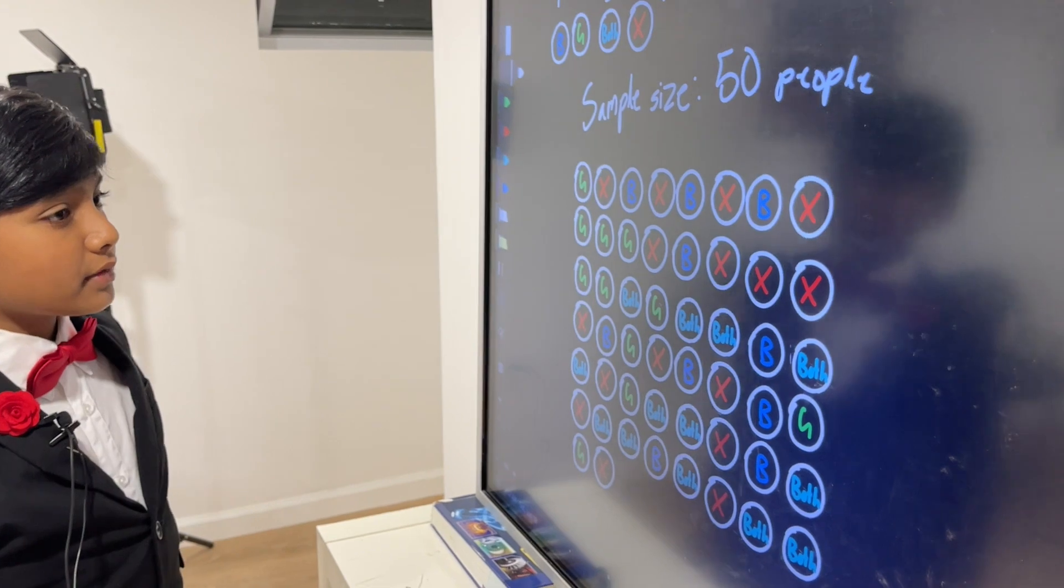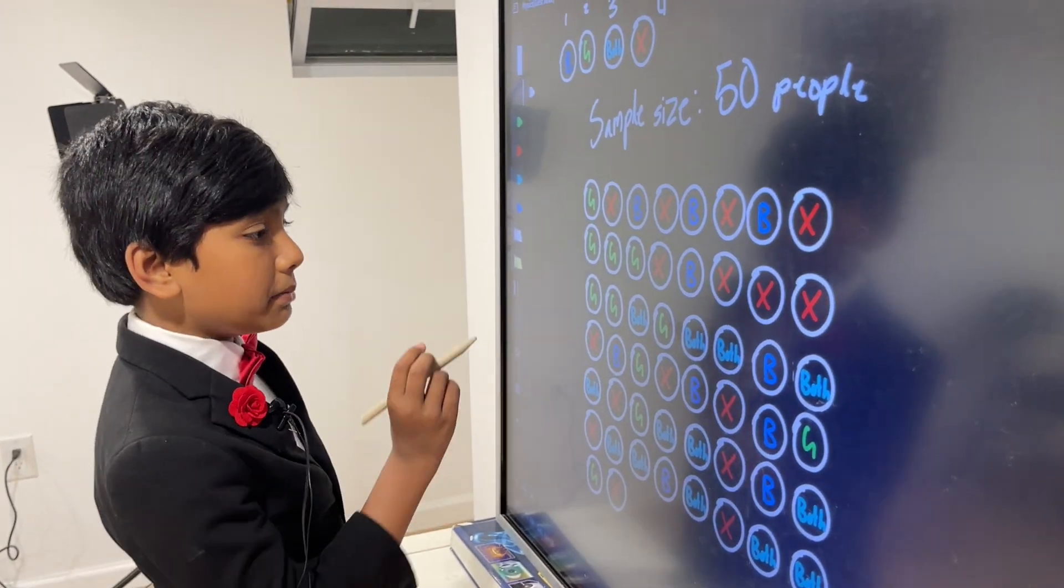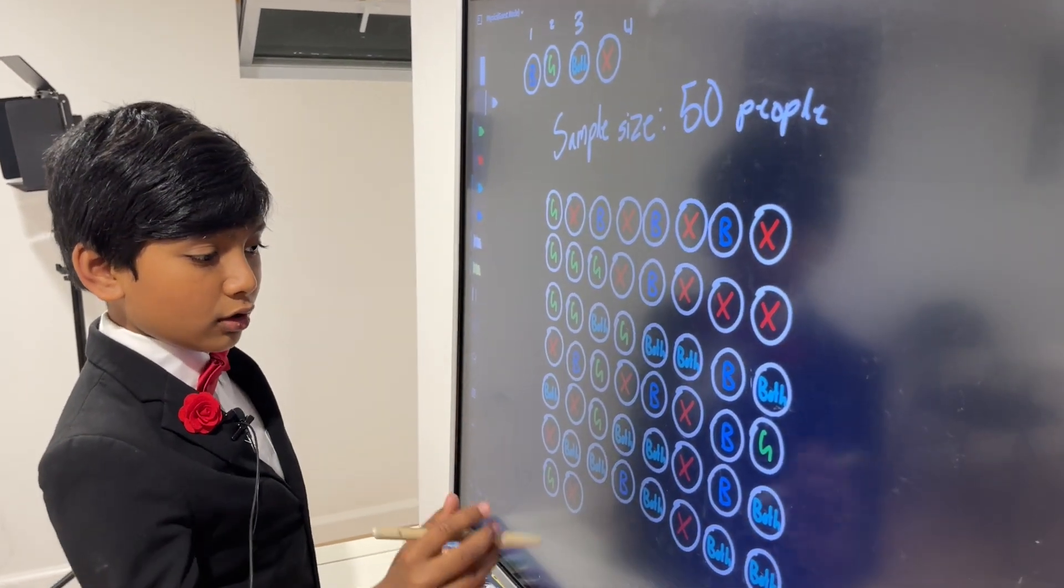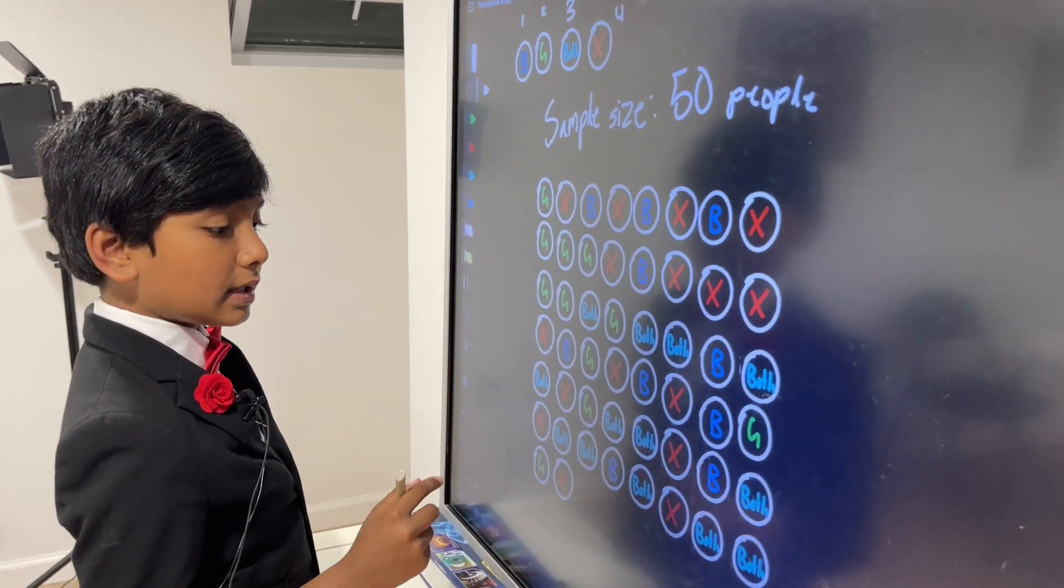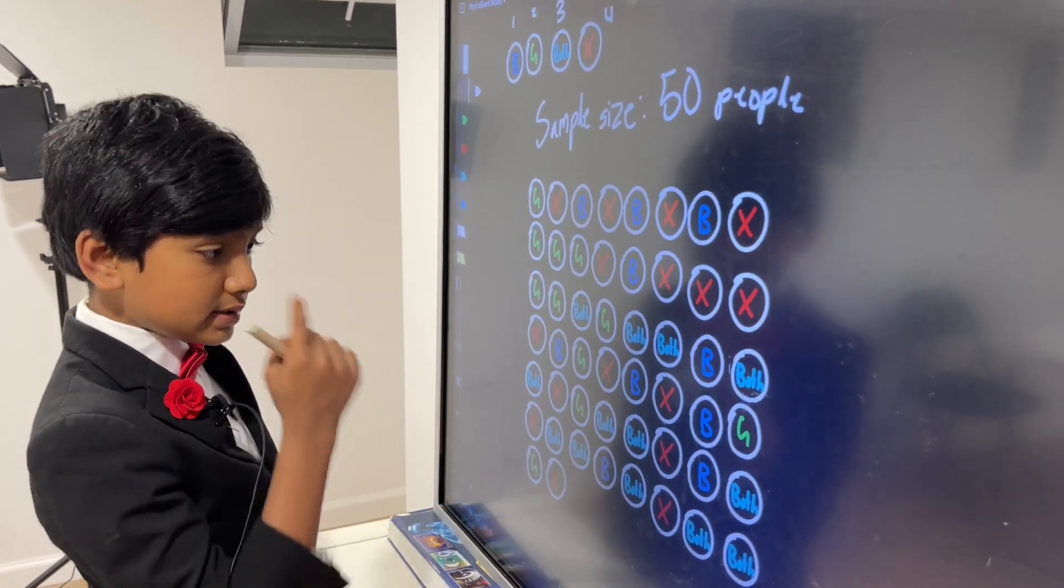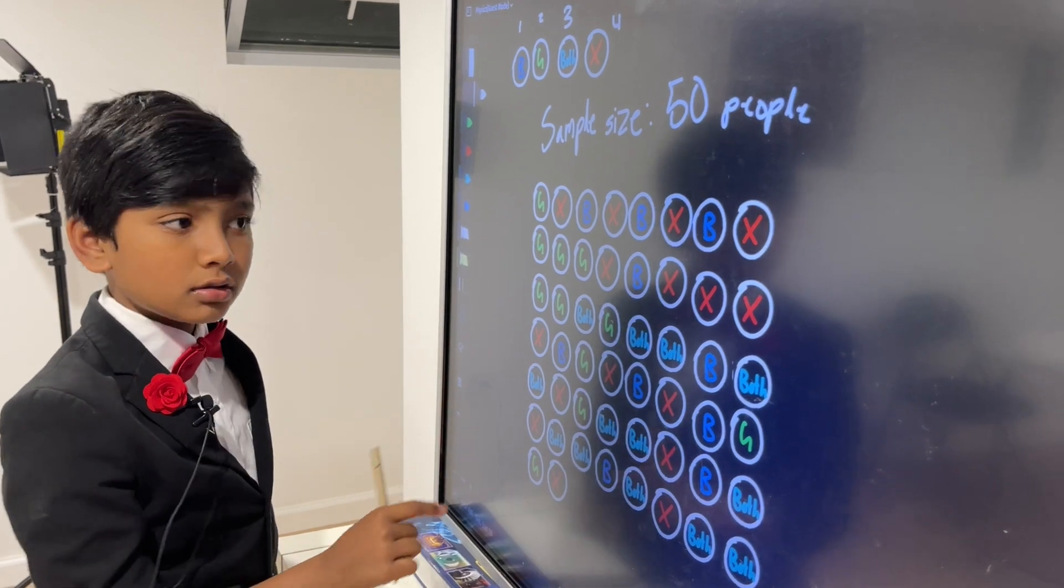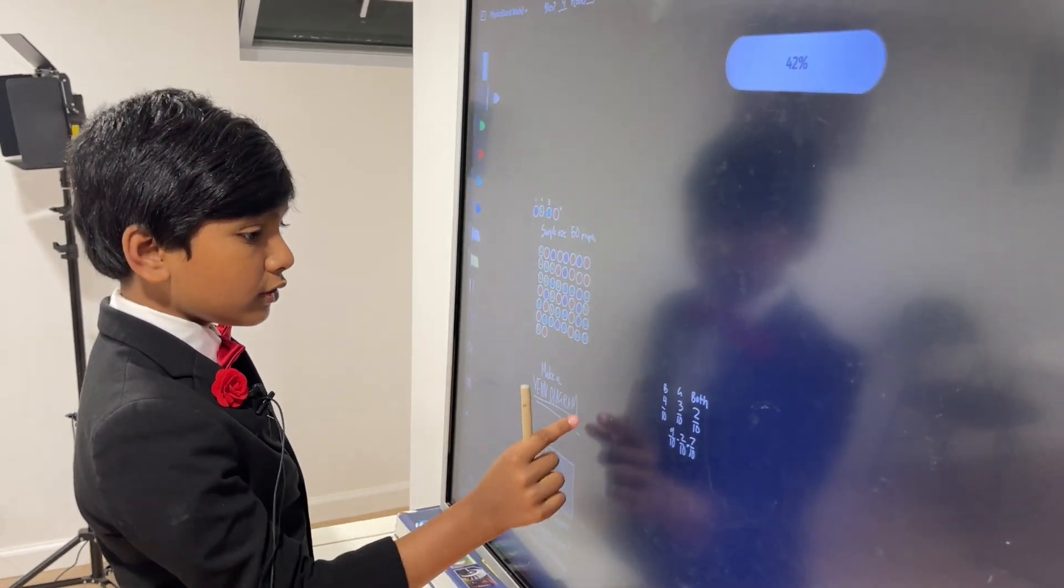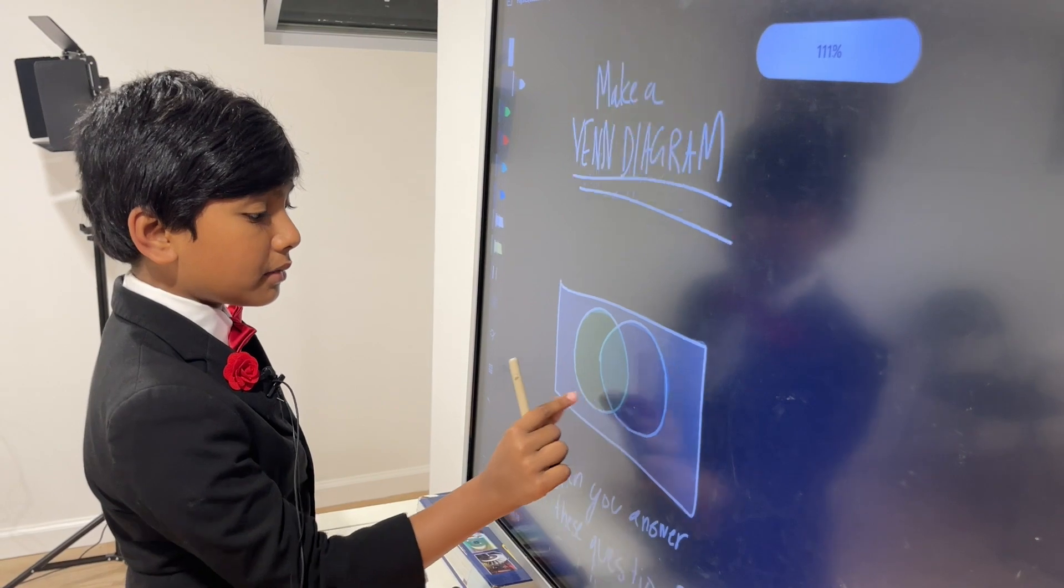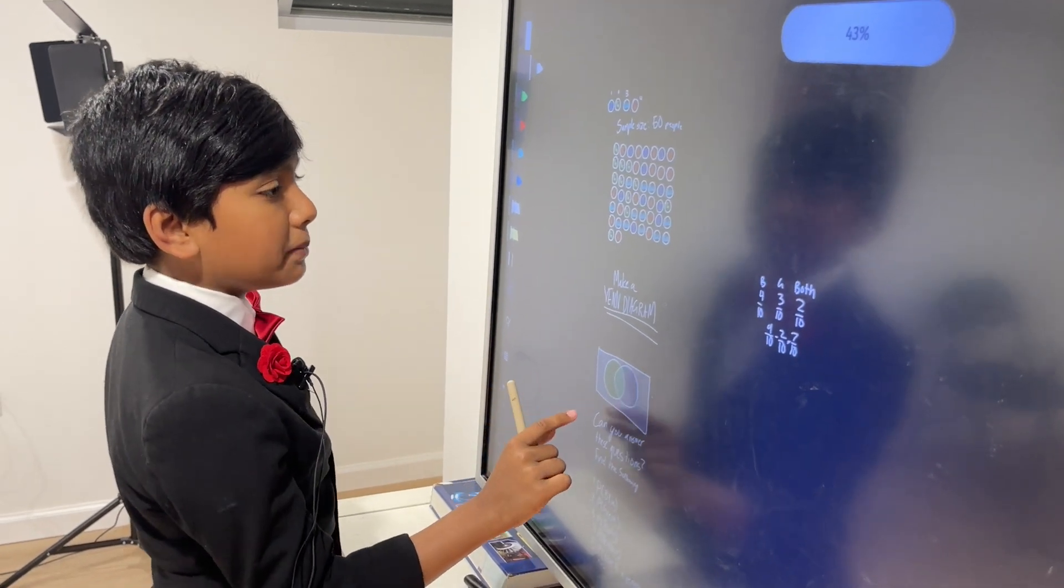So, we can see that some people here like green, some people here like blue, some people here like both, some people here like neither. So, first of all, we need to make a Venn diagram of how many of each type there are.